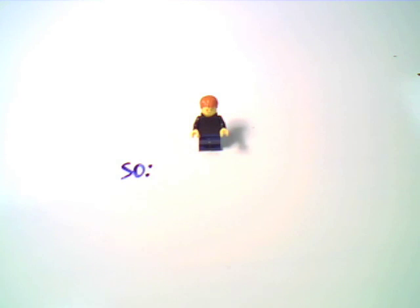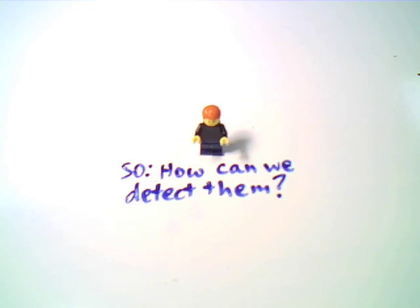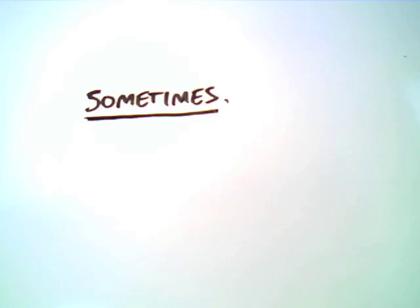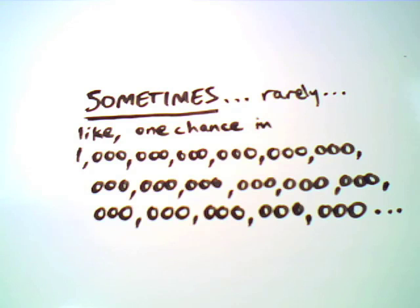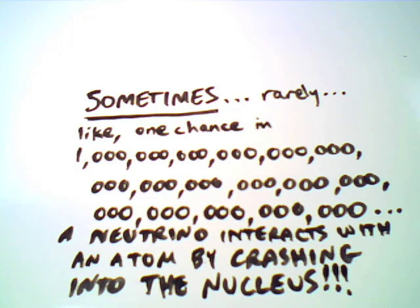Well so how can we detect these neutrinos if they just go right through everything? Well it turns out that sometimes, very rarely, like one chance in a million billion billion billion billion billion billion, a neutrino interacts with an atom. And when that happens, we can detect the bits and pieces that come out of the collision.